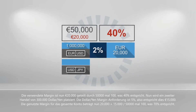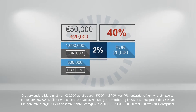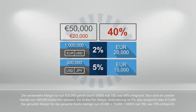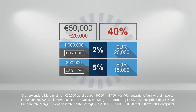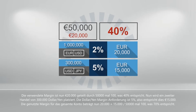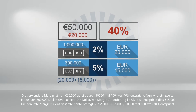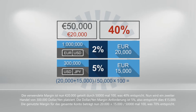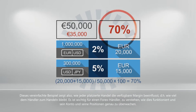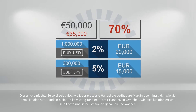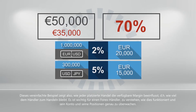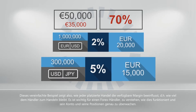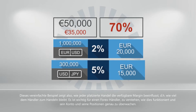The margin used is now 20,000 euros divided by 50,000 times 100, which equals 40%. Now a second trade of 300,000 dollar-yen is placed. The dollar-yen margin requirement is 5%, so this equals 15,000 euros. The used margin for the entire account is now (20,000 plus 15,000) divided by 50,000 times 100, which equals 70%. This demonstrates how each trade placed affects the available margin and how much the trader has left to trade with. It's essential for a forex trader to monitor their account and positions closely.